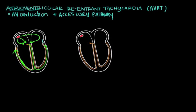Sometimes there's an abnormal path, or an accessory pathway, which is an extra pathway between the atrium and the ventricle. Signal can travel from the atrium to the ventricle through this pathway and excite ventricular tissue that way. Signal can also go from the ventricles back through the accessory pathway to the atrium — so it can travel in the anterograde direction (atrium to ventricle) or the retrograde direction (ventricle to atrium).